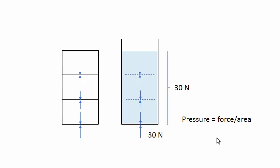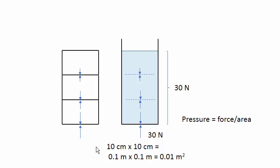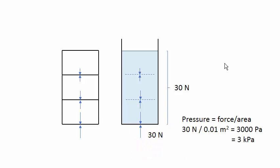Now again, the pressure is force divided by area. The total force is 30 newtons. Let's say the bottom of the container measures 10 by 10 centimeters, or 0.1 meter by 0.1 meter, which is 1 hundredth of a square meter. So the pressure at the bottom of this container is 30 newtons divided by 0.01 square meter, which equals 3,000 pascals. 1 pascal means 1 newton per square meter, or equivalently 3 kilopascals.